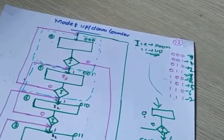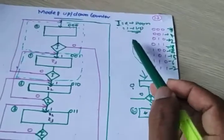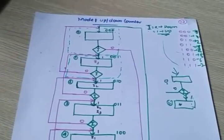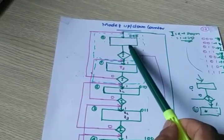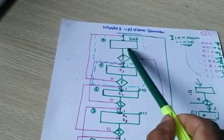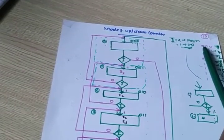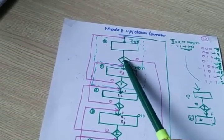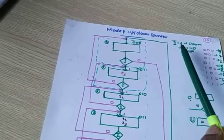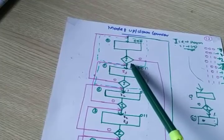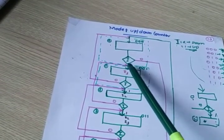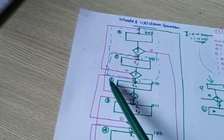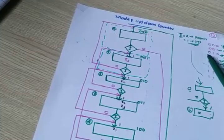If i is 1, up counter. Look at the diagram. The 0th state is represented by a box. Next count for up counter: after 0 (000), next is 1 (001). This is the 1st state. This is the decision box — if i is 1, it goes to the 1st state. Then from state 1, with i=1, it goes to state 2 (010). Up counting: 000 → 001 → 010.